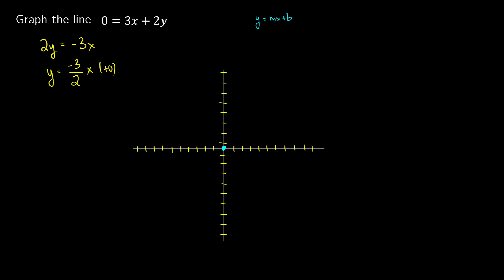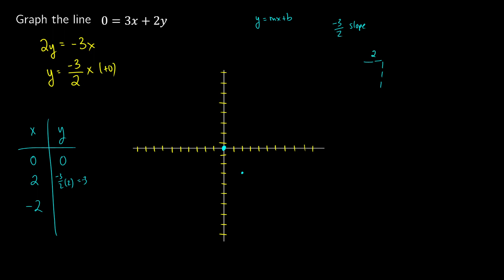Because we have a negative three halves slope, whenever we go 2 in the x-direction to the right, we go 3 spaces down. A negative slope gives us a negative line — it goes from top left to bottom right. Doing a few points: we know 0, 0. For x equals 2, negative three halves times 2 gives negative 6 over 2, which is negative 3. So one point is 2, negative 3, which is exactly what we'd expect from our slope.